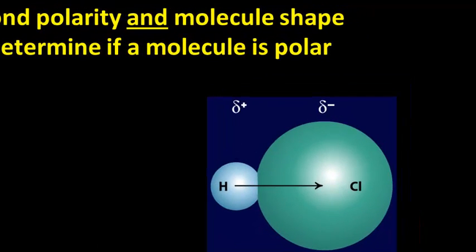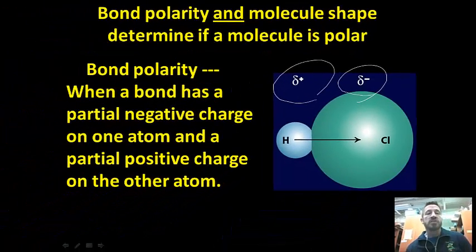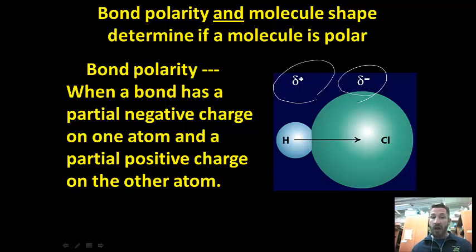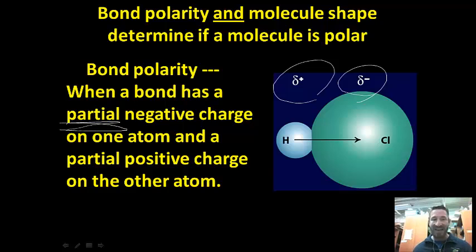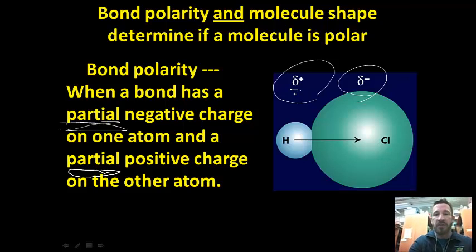HCl is also a polar molecule because there's only two atoms — there's a negative end and a positive end. Bond polarity is when a bond has a partial negative on one atom and a partial positive on the other. Remember that word 'partial' — we reserve the term 'negative' for ionic compounds. We denote the partial charge with a lowercase delta.